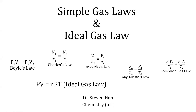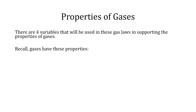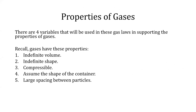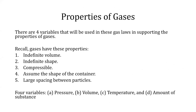This lecture is on simple gas laws and the ideal gas law. There are four variables that will be used in these gas laws in supporting the properties of gases. Recall gases have these properties: 1. Indefinite volume, 2. Indefinite shape, 3. Compressible, 4. Assume the shape of the container, and 5. Large space in between particles. The four variables to be studied are A) pressure, B) volume, C) temperature, and D) amount of substance.